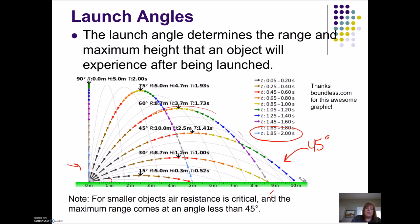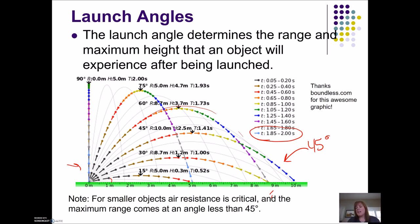For smaller objects, air resistance is critical, and so the maximum range will actually come at less than 45 degrees. When you launch at a lower angle, there's not as much vertical velocity to get pushed back by air resistance. You'll see this effect in our rocket lab because, unfortunately, I cannot get rid of air resistance when we're outside. If there's wind, that's going to be an even bigger problem.